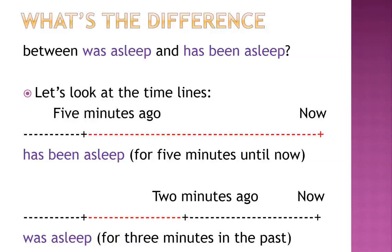What's the difference between 'was asleep' and 'has been asleep'? 'He has been asleep for five minutes until now' — notice the red dotted line connects the past to the present. That's 'has been asleep.' In the second example, 'he was asleep for three minutes in the past' — we connect five minutes ago to two minutes ago, both in the past. It is not connected to now.